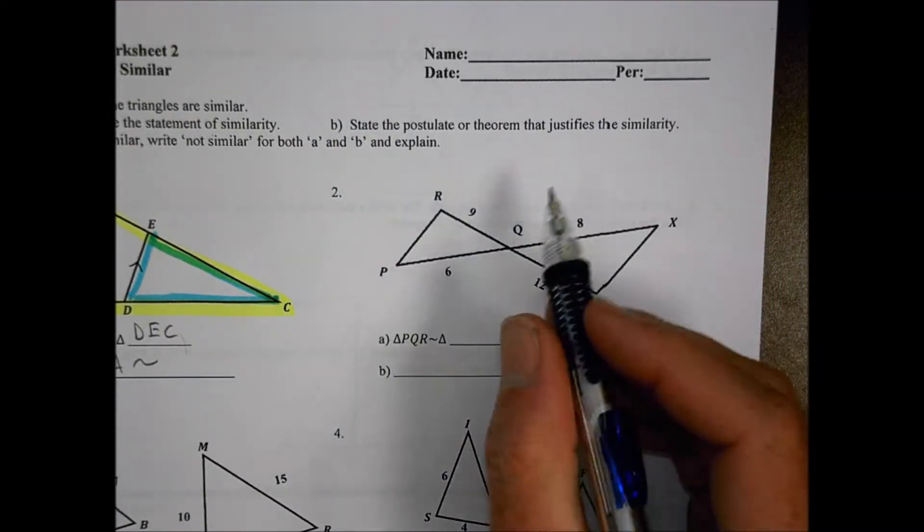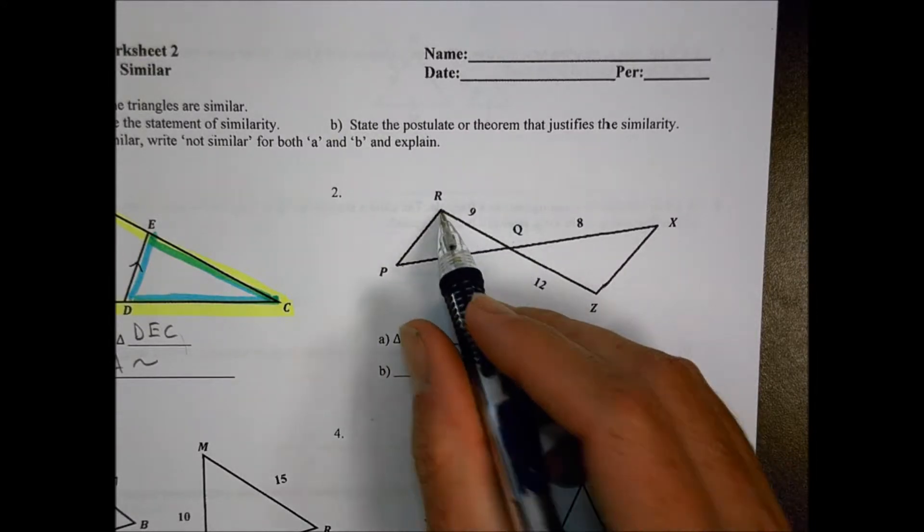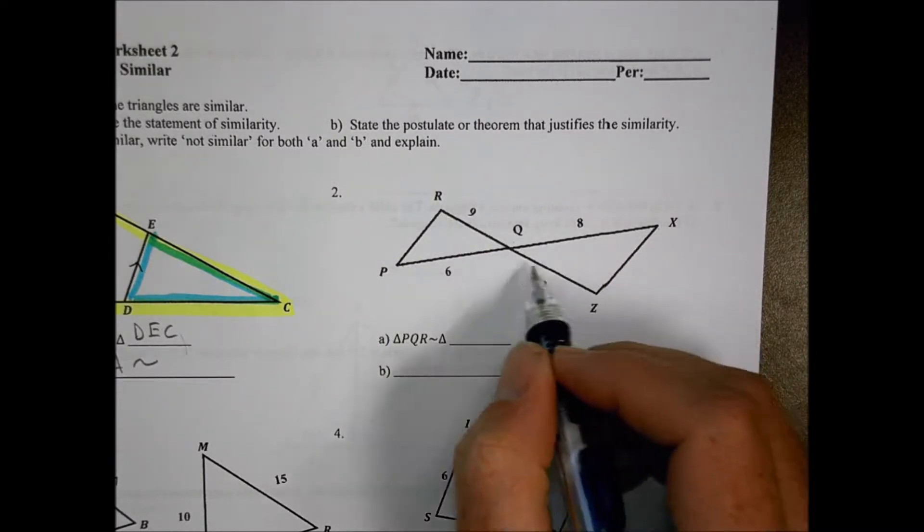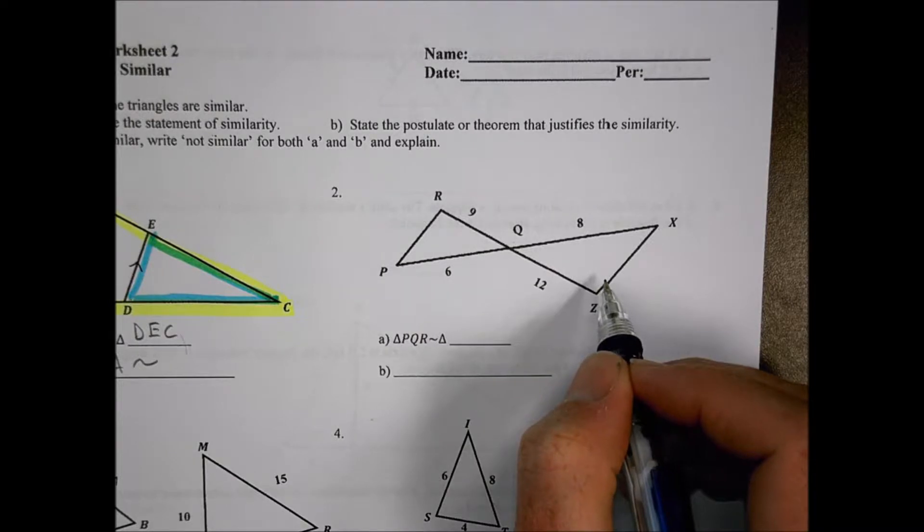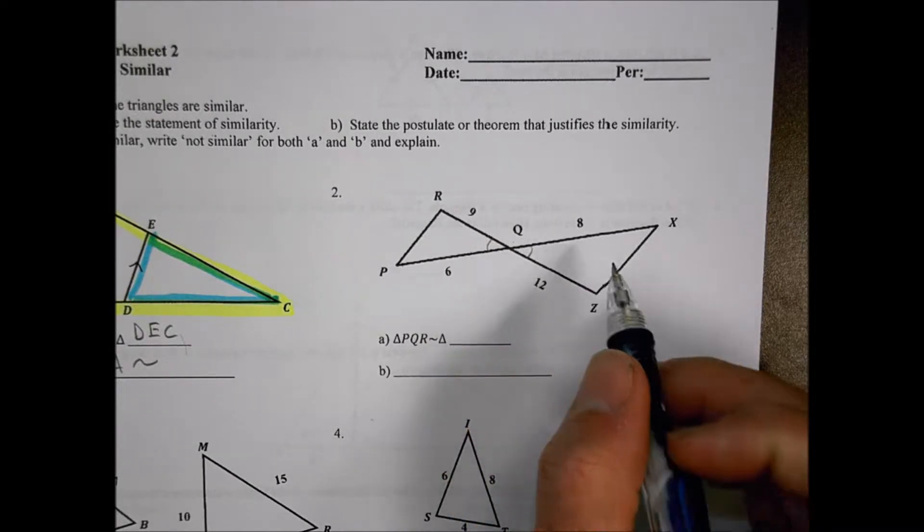And that triangle there, going the same order, is D, E, C. And we would call that similar because of the angle-angle similarity postulate there. Looking at number 2, we have P, Q, R. And then we also have, I want that equal to something else. Well, we know those angles are going to match up there.